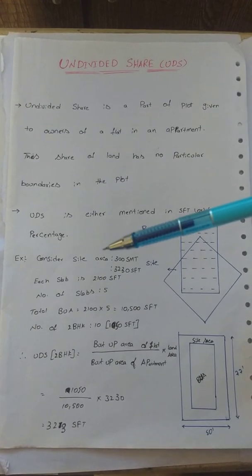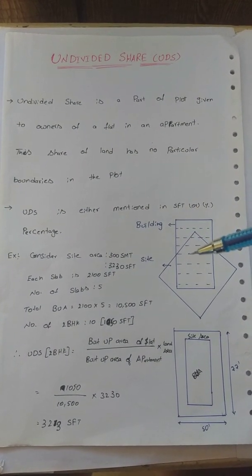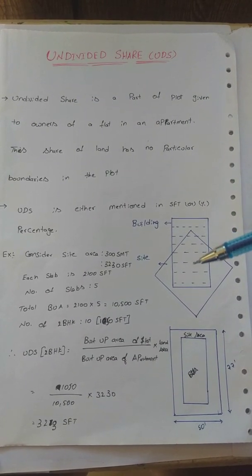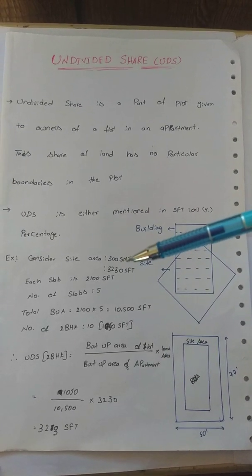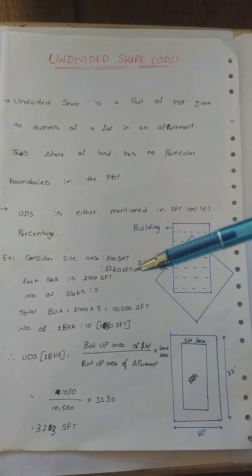Here is a site area. In this site area, I have an apartment. In this apartment, the number of floors is 5. In each floor, there are two beds. Now we are going to calculate it. This site area is 300 square meters.